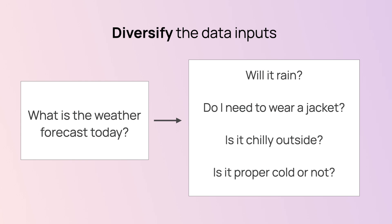You can also use an LLM to help diversify your inputs. For example, if your app can answer questions about weather — like 'what's the weather today' — you can use it to generate different ways of asking essentially the same thing, like 'what's the forecast' or 'will it rain today,' to make sure you can correctly process all types of inputs.